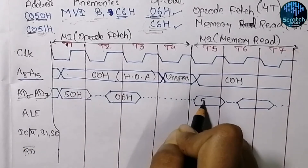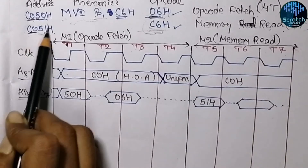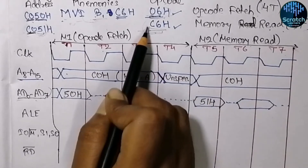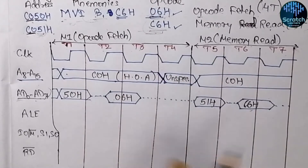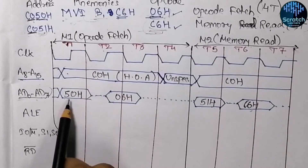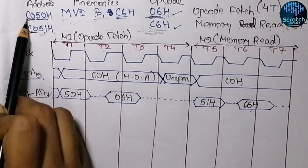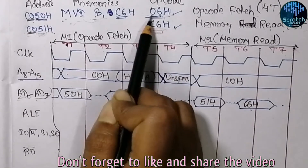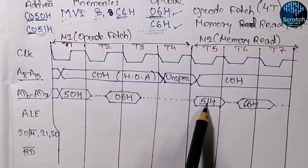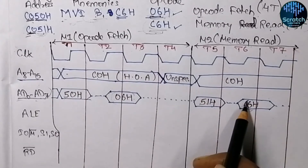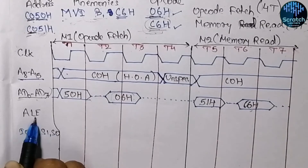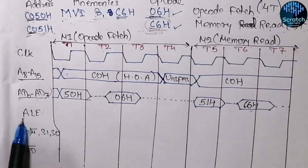For the memory read cycle, T1 stores the lower-order address and T2 and T3 store the data. Since we have already fetched the opcode, next we fetch the data to be loaded. This data is taken from lower-order address 51H. The data to be loaded is C6H, so the microprocessor takes the higher-order address C0H and lower-order address 51H — that is, address C051H — and from that address loads the data C6H.